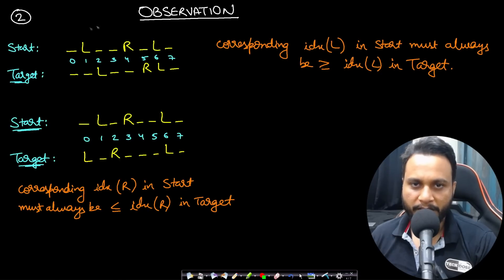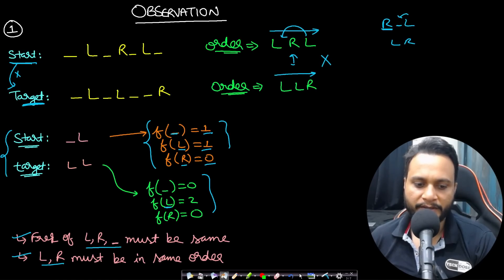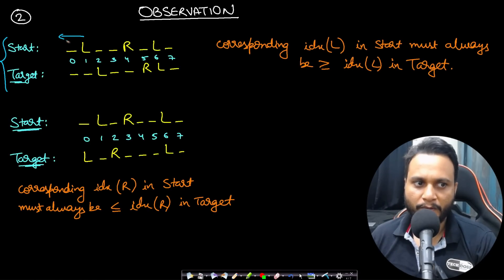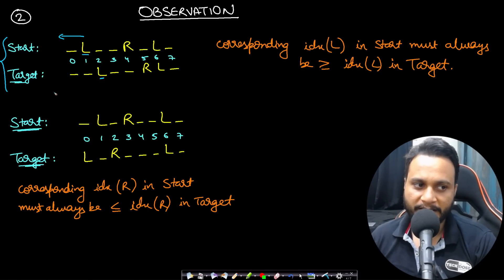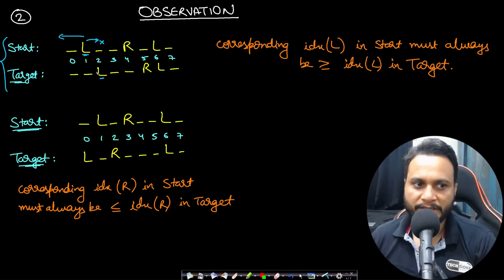Now let's look at another observation using the first example. Even when frequency and ordering conditions are satisfied, remember that L can only move to the left. If you want to match an L at index 1 in target with an L at index 2 in start, that match will never happen — because this L at index 1 cannot move to the right. For this type of match to be possible, the L in the target must always be at an index less than or equal to wherever the corresponding L in start is present.